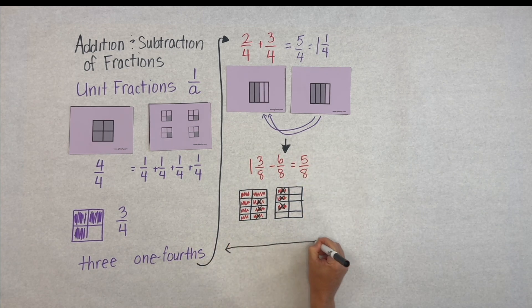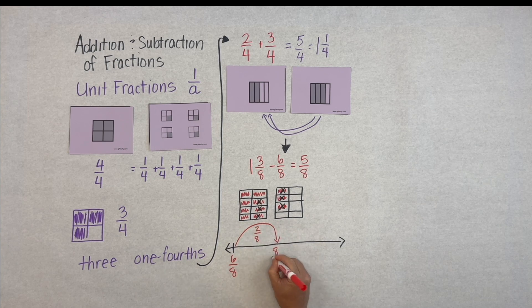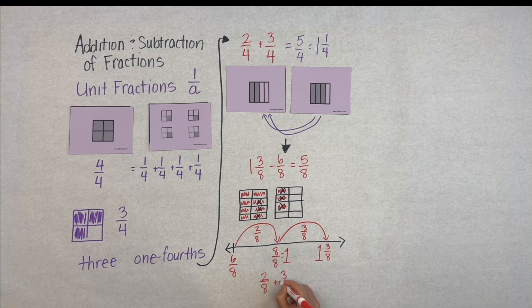But we could also think of subtraction as addition. Here we'll start at six-eighths and ask how many do I need to add to get up to one and three-eighths? Well if I jump two-eighths that gets me to a whole, and then I add three-eighths more to get me to one and three-eighths. In total I've used five-eighths and that's the difference.